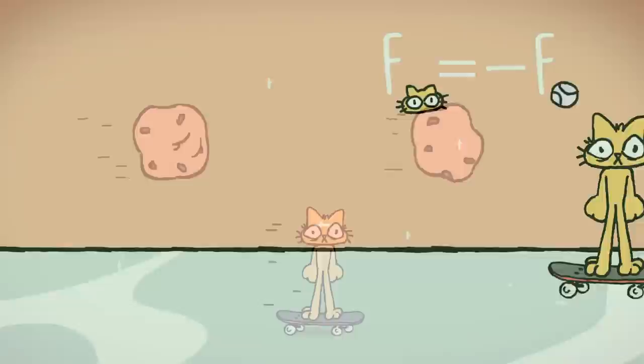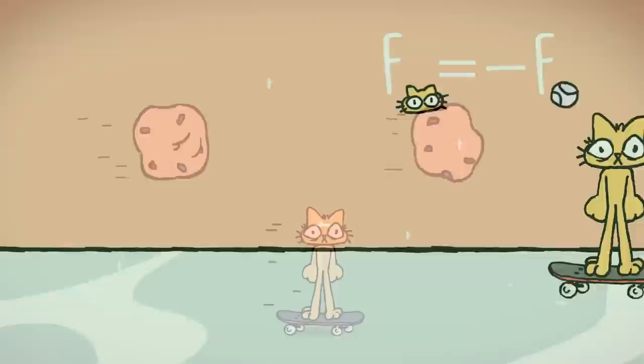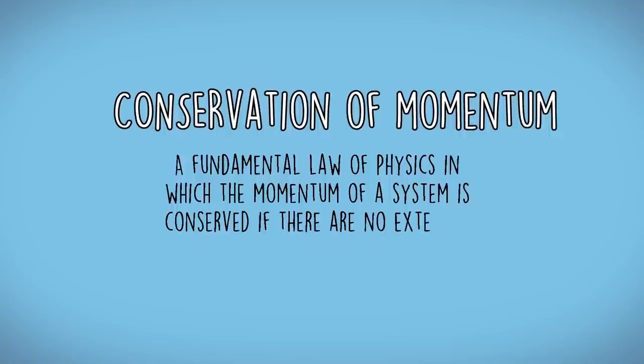The first by Newton's laws, and the second with relativity. Hopefully at least one of them jives with you. So first, what is the conservation of momentum? The conservation of momentum is a fundamental law of physics in which the momentum of a system is conserved if there are no external forces acting on the system. So before we get into the conservation of momentum as a whole, let's remind ourselves about what the words mean separately — what is momentum, and what does it mean for it to be conserved?